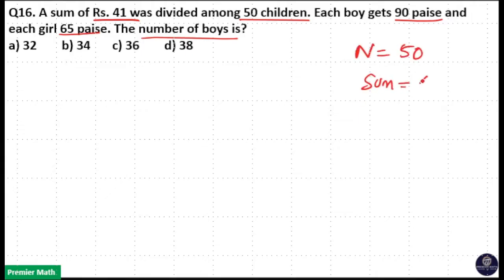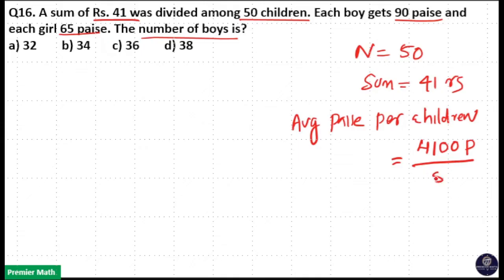Each child gets, that is average paise per child, equal to total number of rupees which is 41 rupees, that is 4100 paise, divided by number of children 50. That means this will be equal to 82 paise, so each child gets 82 paise.